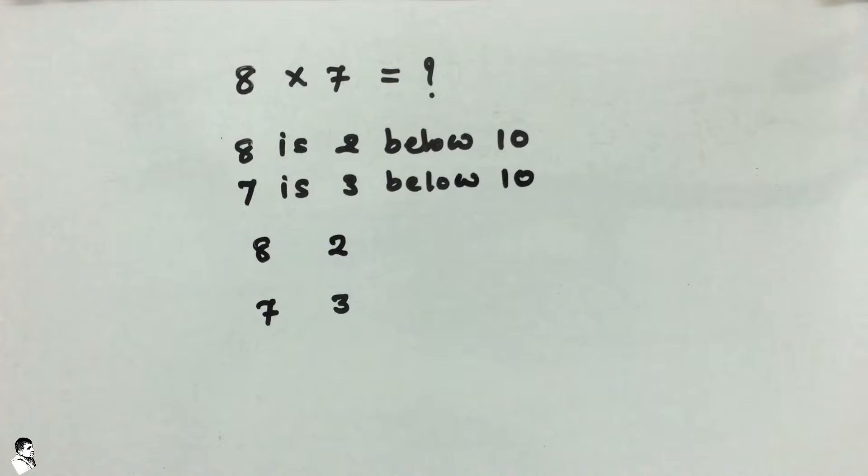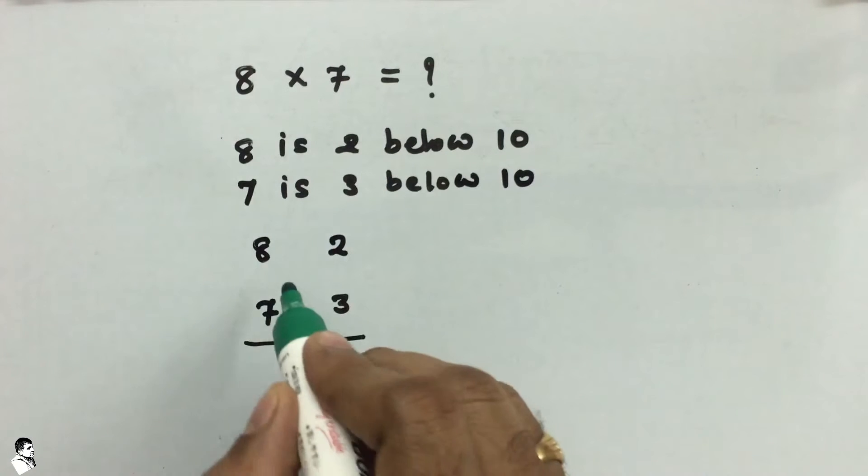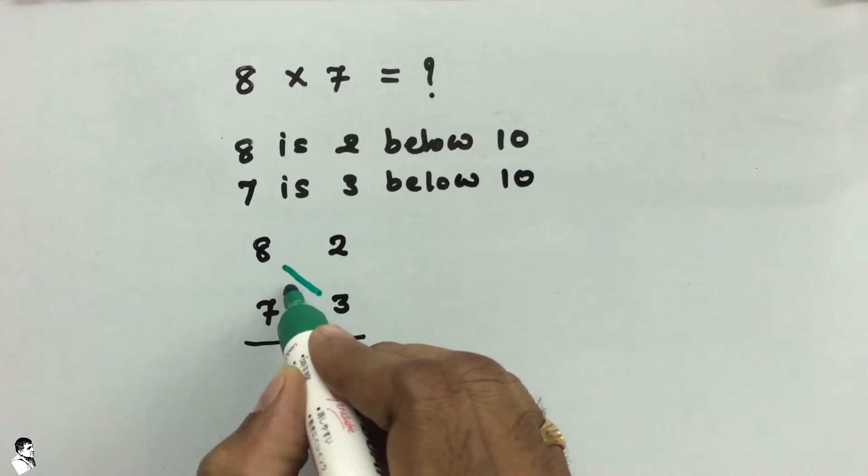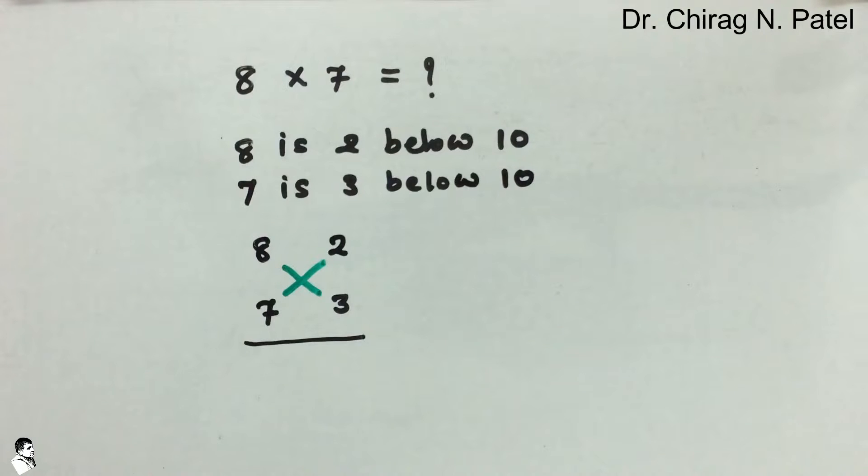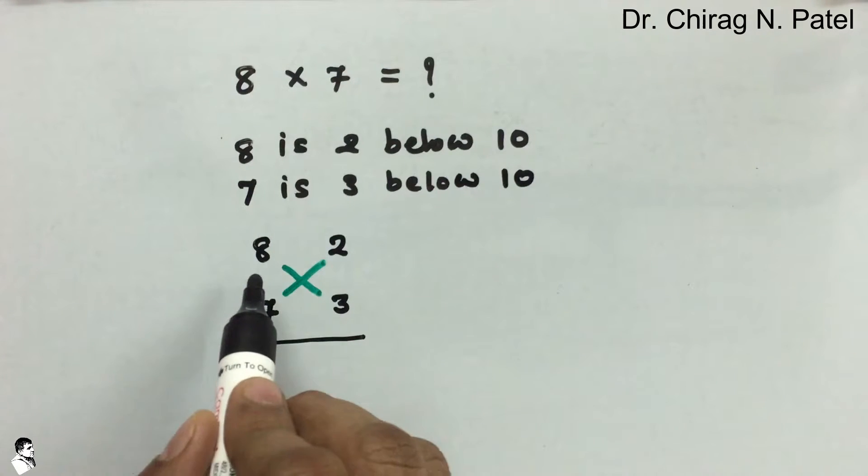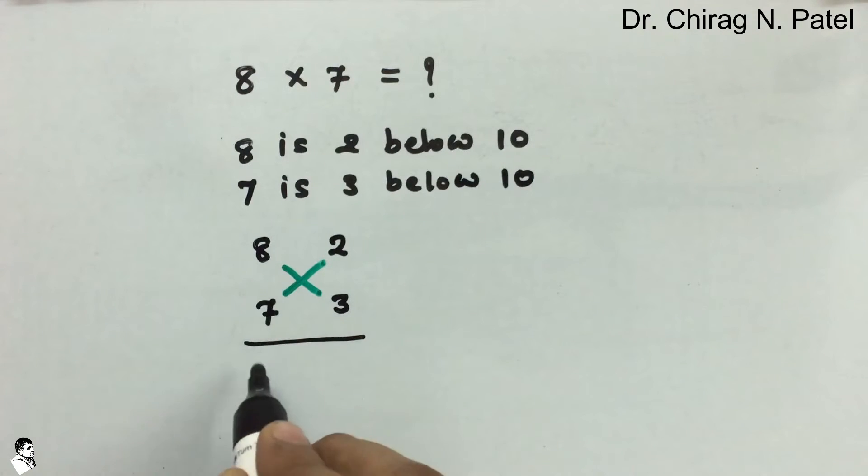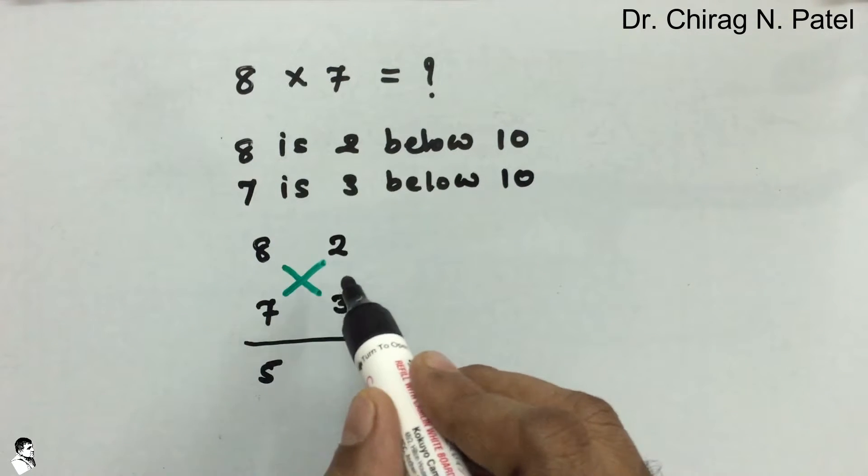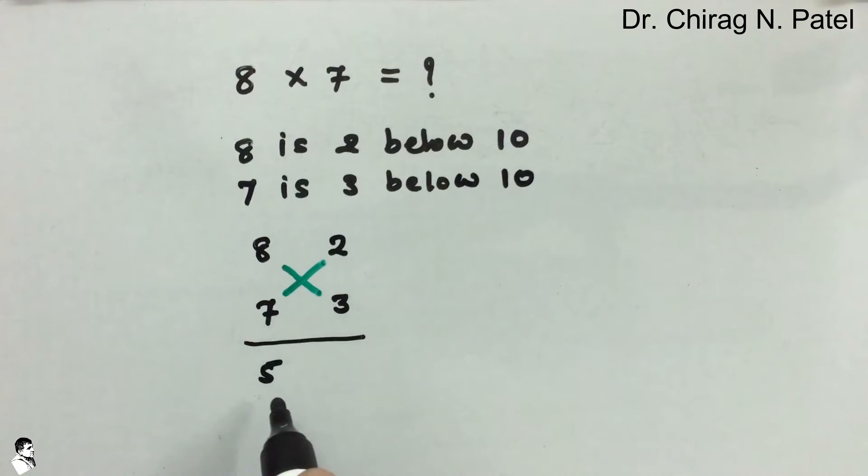Now here we are using a crosswise and vertical calculation. So if we use crosswise calculation first, we have to subtract one number from the other. So here subtraction from 8 of 3, the answer will be 5, or you can subtract 2 from 7. The answer will remain the same, that is also 5. So either way you can do.